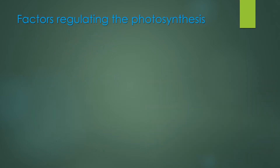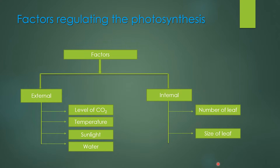If we talk about the factors of photosynthesis, we can categorize them into two types. The first one is the external factor and the next one is the internal factor. Internal factors mean the structural parts of the plants responsible for photosynthesis — such as the number of leaves and size of the leaf. External factors are the atmospheric factors: level of carbon dioxide, temperature, sunlight, and water.